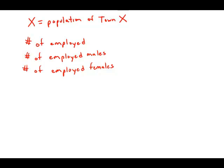So first of all, I'm going to write those percents as decimals. So 64% of the town is employed — that is 0.64 times X. 48% of the town are employed males, so that is 0.48 times X.